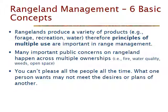It's really important to think about the multiple ownerships of land and the fact that things happening on range work across those ownerships. Fire doesn't stop at boundary lines. Water quality is affected by all your neighbors, including the land you're responsible for. Weeds don't stop when they cross from one type of land to another. Open space can only be created if a lot of people with different ownerships are working together.